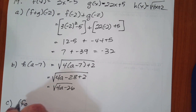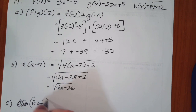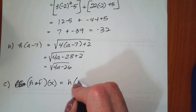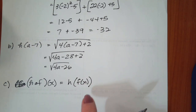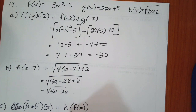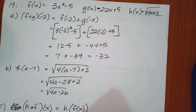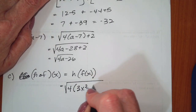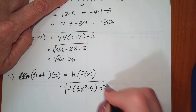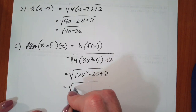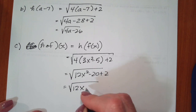Part c asks for h dot f of x. This is the same thing as finding h of f of x, which means every place in h that I see an x, I'm going to replace it with f. So this becomes the square root of 4 times f of x, which is 3x squared minus 5, plus 2. Simplifying, that becomes the square root of 12x squared minus 20 plus 2, which is the square root of 12x squared minus 18.